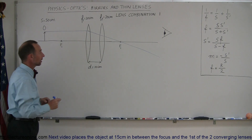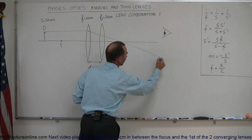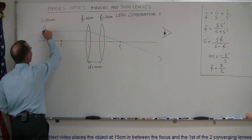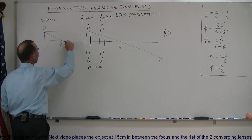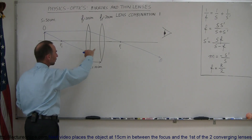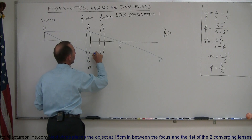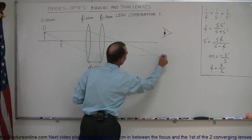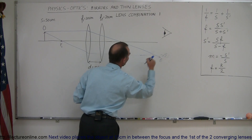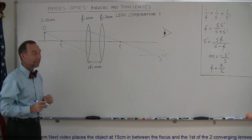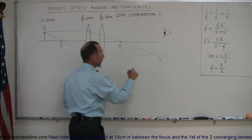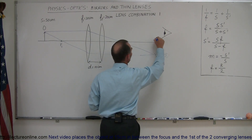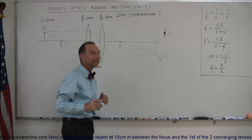Now we draw the second ray. This ray will go through the focal point in front of the lens, continue on until we hit the lens, and at that point it will diverge and continue on parallel to the normal until it hits the other ray. Where those two rays meet, that will be the location of the first image — we call this image one, caused by the first lens.